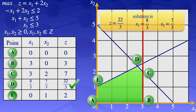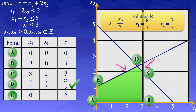However, we have the constraint that x1 and x2 must be integers, so this solution is not integral and we need to make a cut — a constraint satisfied by all feasible integer solutions but not by the current non-integer values. We look at the feasible region and identify the integer points closer to point D; those two highlighted points will be used to generate the cut.